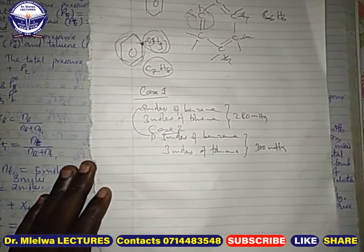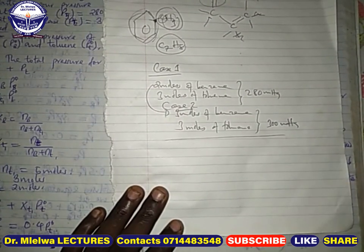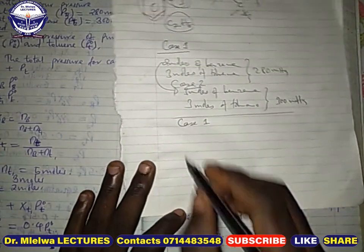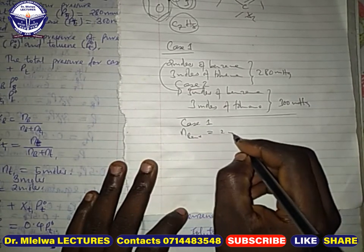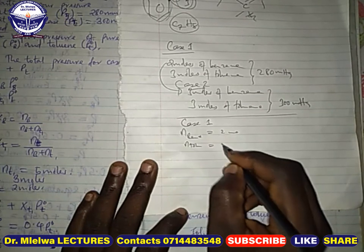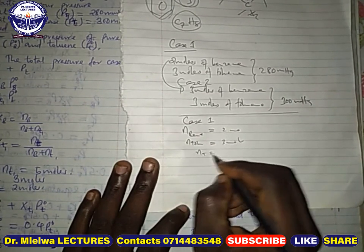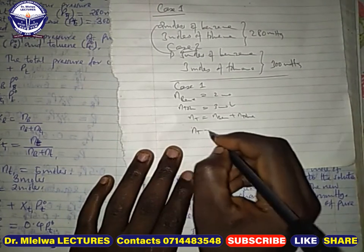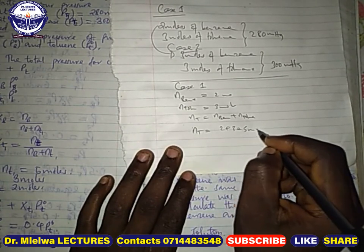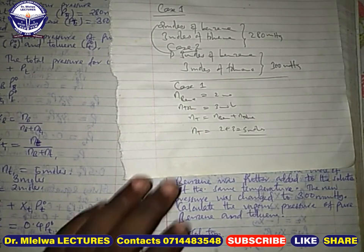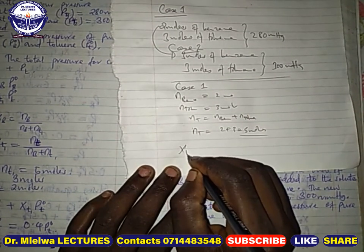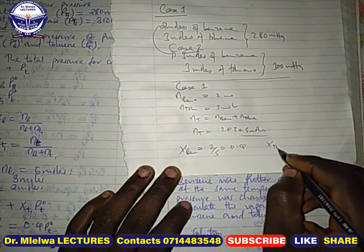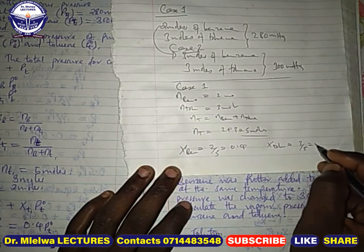The question is: how can we calculate the vapor pressure of pure benzene and pure toluene? Let's start with case one. In case one, the number of moles of benzene is two and toluene is three, so the total moles is five. The mole fraction of benzene is 2/5 = 0.4, and the mole fraction of toluene is 3/5 = 0.6.